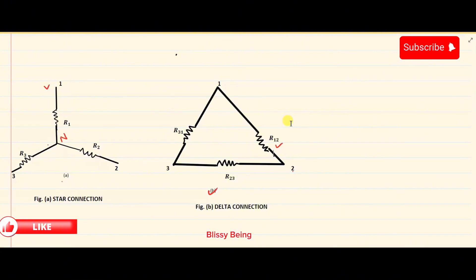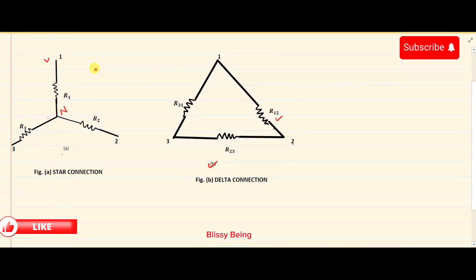Now let's see how we can transfer a star circuit into a delta and delta configuration into a star. Normally, a star circuit can be converted into a delta, and a delta circuit can be converted into a star.